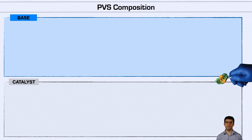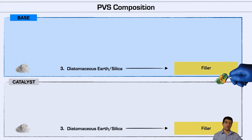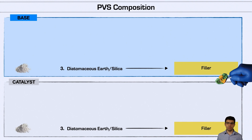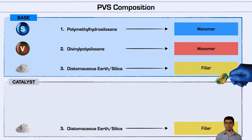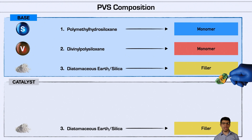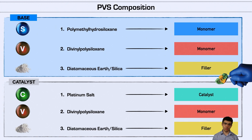The PVS composition comes in two cartridges connected in a dual barrel. Both cartridges contain fillers — diatomaceous earth or silica, especially colloidal silica — which dictate the different viscosities. The base cartridge contains polymethylhydrosiloxane (monomer S) and divinyl polysiloxane (monomer V). The catalyst cartridge also contains monomer V, and the catalyst is a platinum salt. Memorize that because it's very important for many clinical applications — the platinum salt catalyst is critical for understanding PVS material behavior.